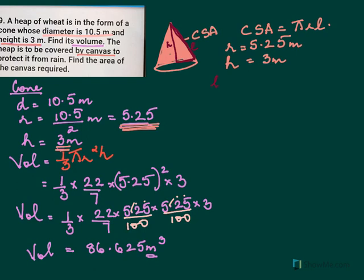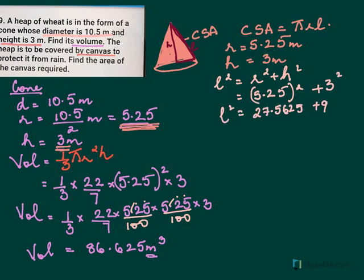This is the L. So L square equal to R square plus H square. Now R square, your R is 5.25, so this is the whole square. Your H square is 3, and you need to work this out now. So here you calculate 5.25 square. L square and your L square will come to 36.5625.